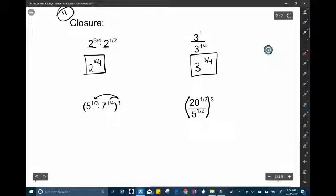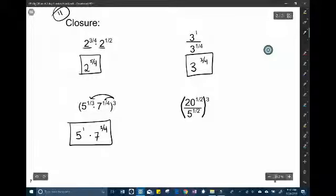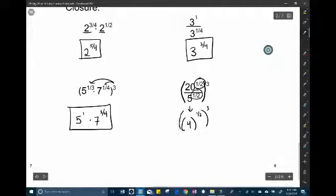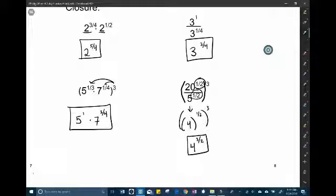Distributing the 3. Okay. 5 to the 3 over 3 is 1 times 7 to the 3 fourths. And then this one here. We can use our trick. We have the same exponents. So let's use that trick. So let's make it 4 to the 1 half to the 3rd. Which makes it 4 to the 3 halves. Okay. And that's it for those. So nice job on those.